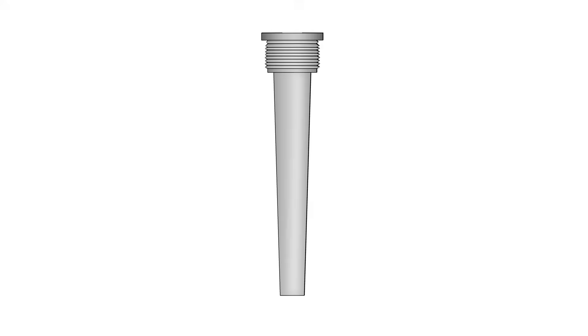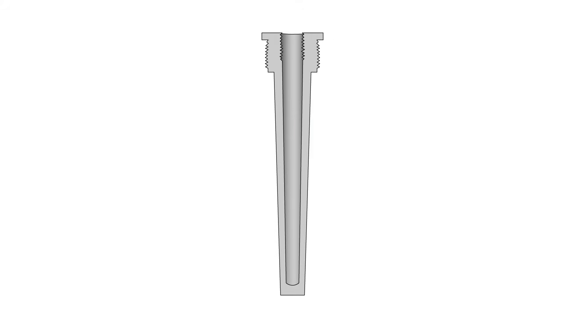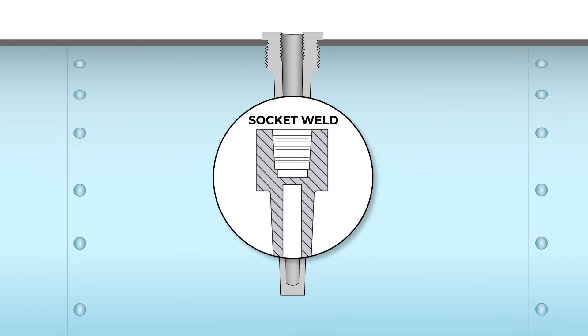A thermal well in its most basic form is a tube closed at one end and mounted through the pipe or tank wall into the process media. Mounting varieties include threaded, flanged, or socket weld designs.